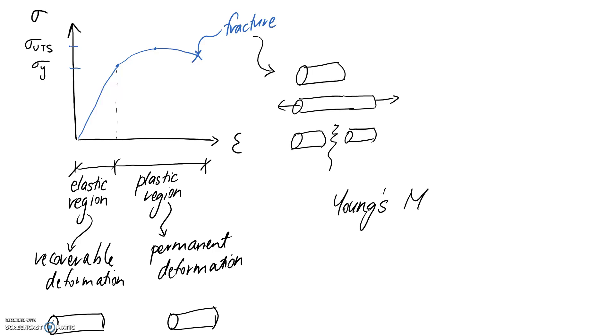Young's modulus - as I said, it's the gradient, and we tend to give it the symbol E. Because it's the gradient, it's equal to the rise over the run, or in this case the change in stress over the change in strain.